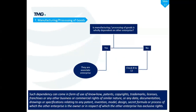The seventh criteria covers manufacturing or processing of goods: if an enterprise's manufacturing or processing is wholly dependent on another enterprise through use of know-how, patent, copyright, trademark, licence, franchisee, or any other business or commercial rights including data or documentation, then both enterprises are associate enterprises. This dependency in manufacturing or processing is sufficient to establish an associate relationship, even without equity holding, loan, guarantee, or governing body connections.